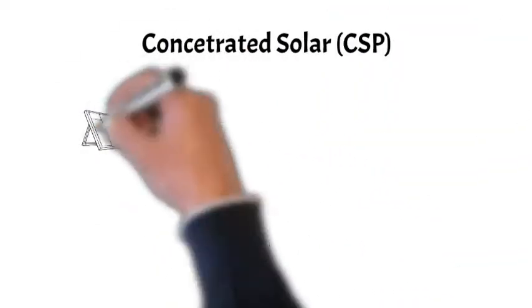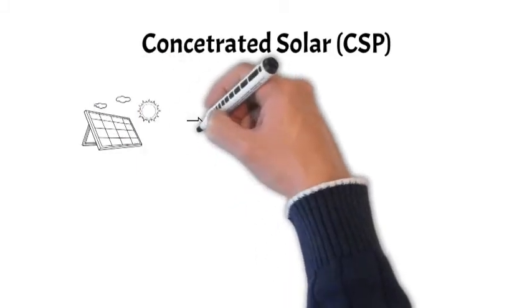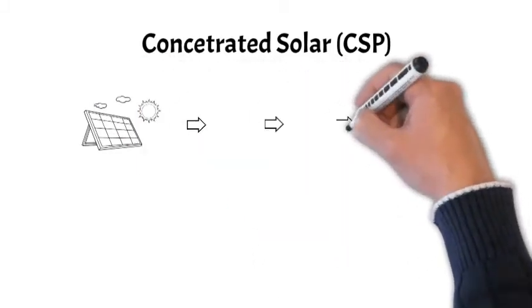Concentrated solar power, also known as CSP. Unlike photovoltaic, PV, which captures sunlight and converts it directly into electricity,